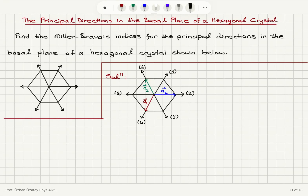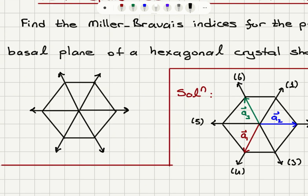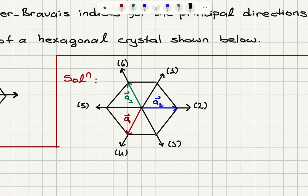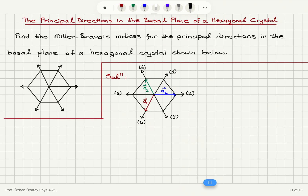Find the Miller-Bravais indices for the principal directions in the basal plane of a hexagonal crystal shown below. We have the hexagonal plane in the unit cell at the base, and we are trying to find all the principal directions. There are six of them as you can see. I have three vectors here: a1, a2, a3 — three basis vectors. Normally these basis vectors should be linearly independent, but in this case they are not.